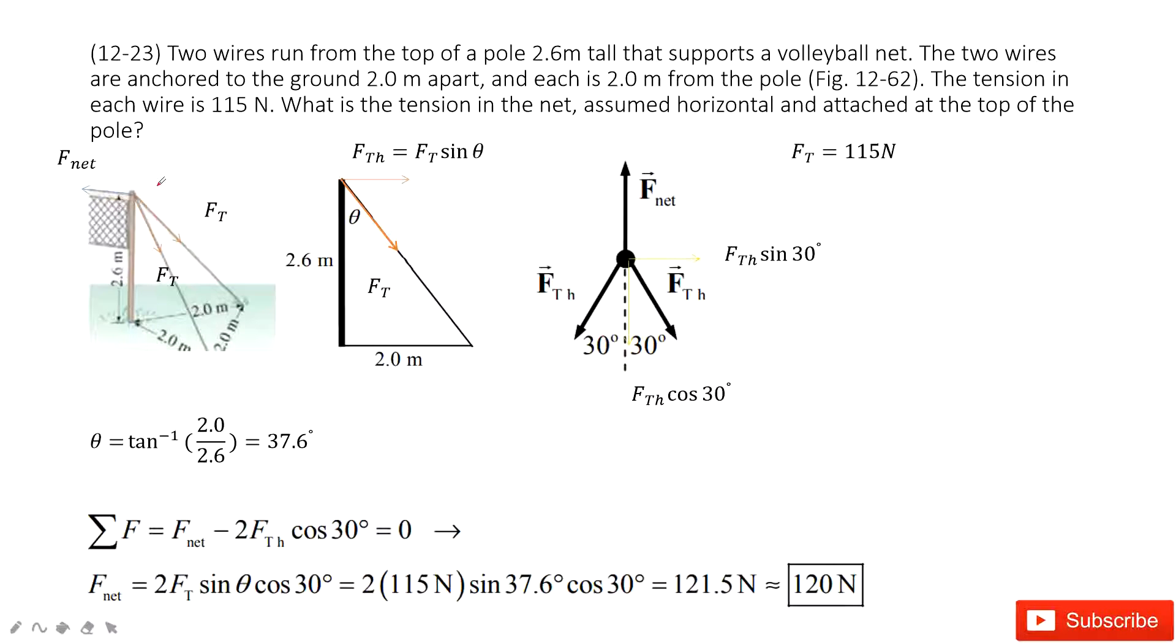So first, we do the force analysis. We can see these two strings. The forces acting on this net are Ft, Ft, and Fnet. They are not in the same plane. If we want to solve it, we need to project it in the same plane. So we look at the horizontal plane. We need to project Ft horizontally. We can draw this picture.